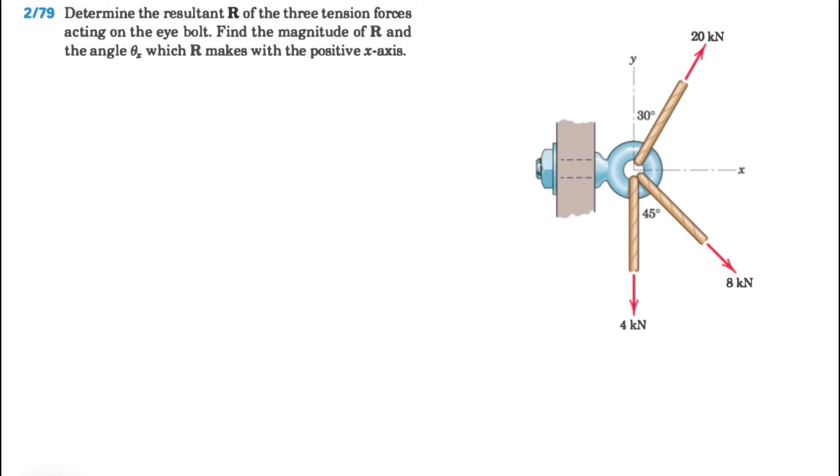Welcome back to the channel. We're going to be solving another question from the second chapter of the Merriam textbook, question 79. In this one we need to determine the resultant of these three tension forces acting on the eyeball.